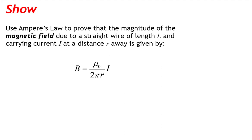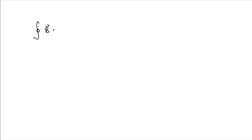Use Ampere's Law to prove that the magnitude of the magnetic field due to a straight wire of length l and carrying current i at a distance r away is given by B equals mu-naught i over 2 pi r. Ampere's Law is the line integral over a closed loop of the magnetic field, and the result of that line integral is equal to the permeability of free space times the current enclosed by that closed loop.